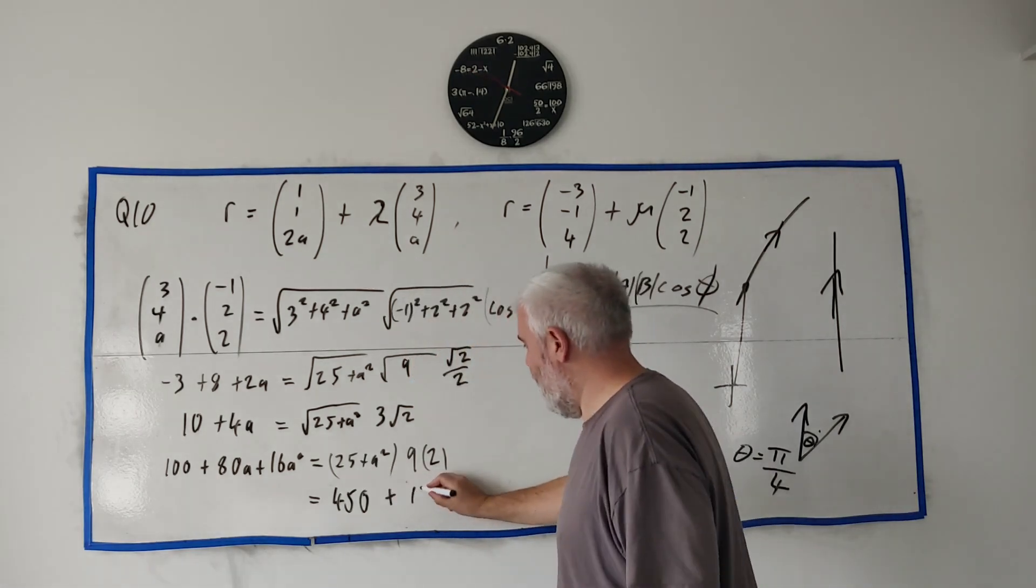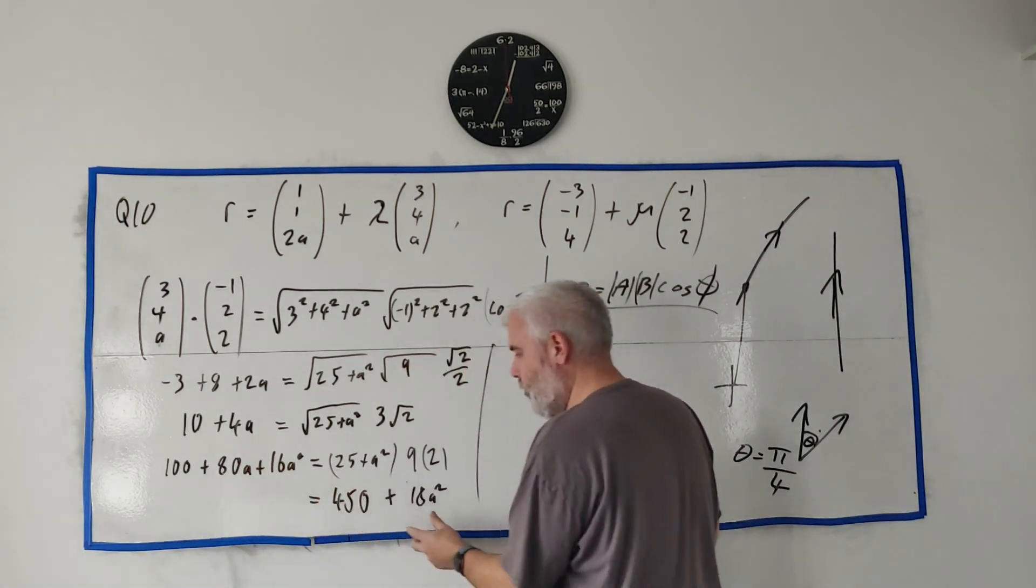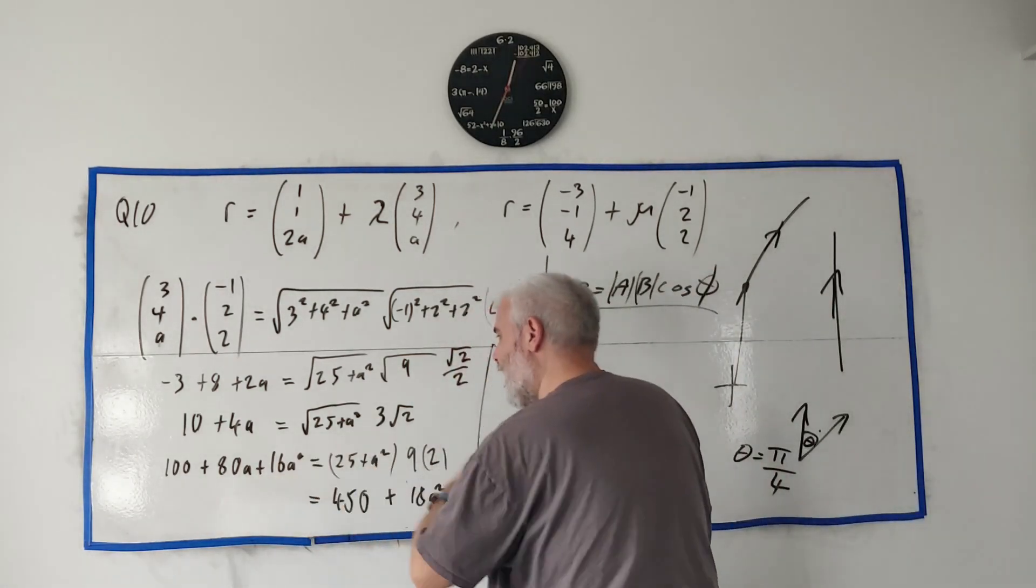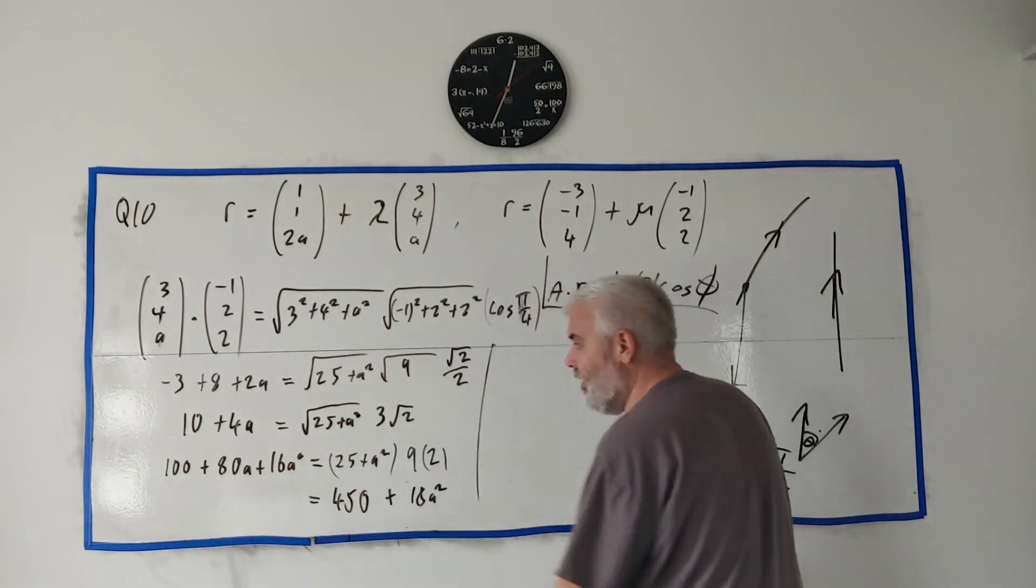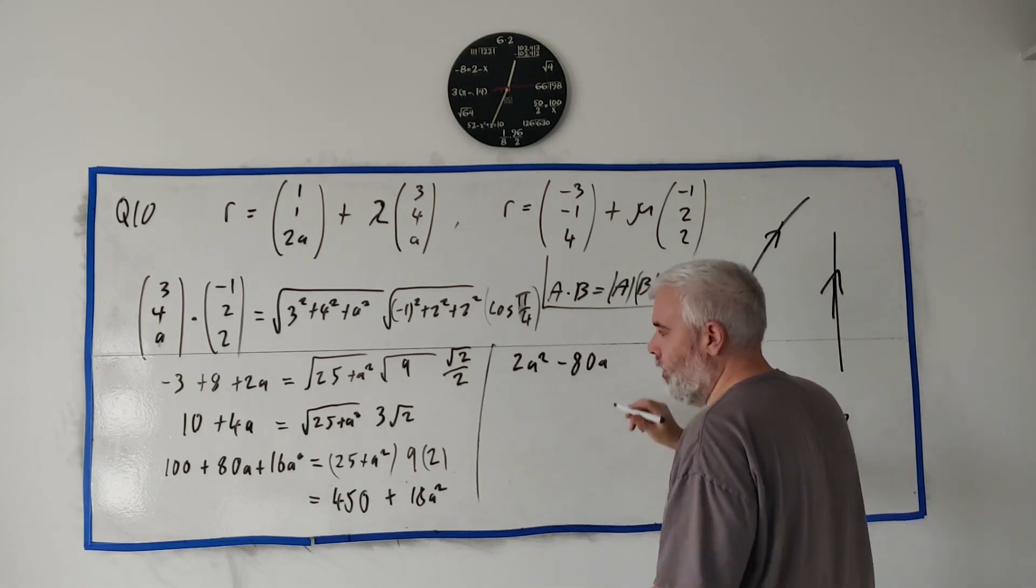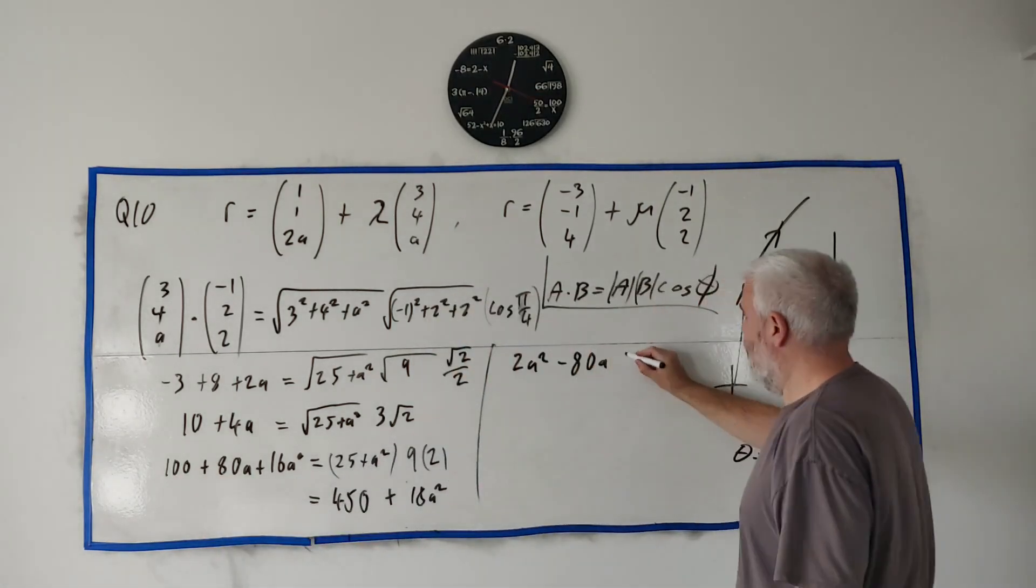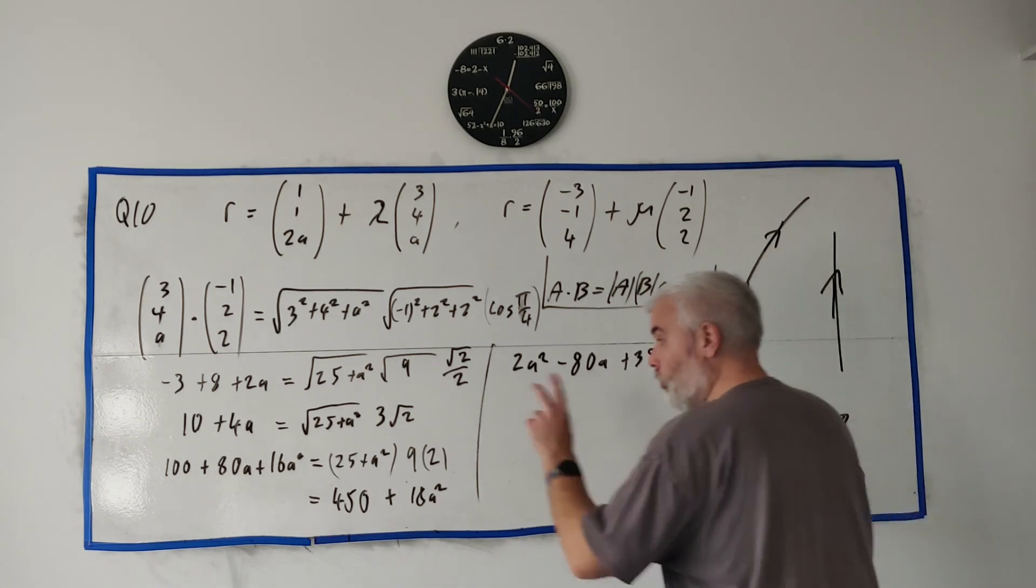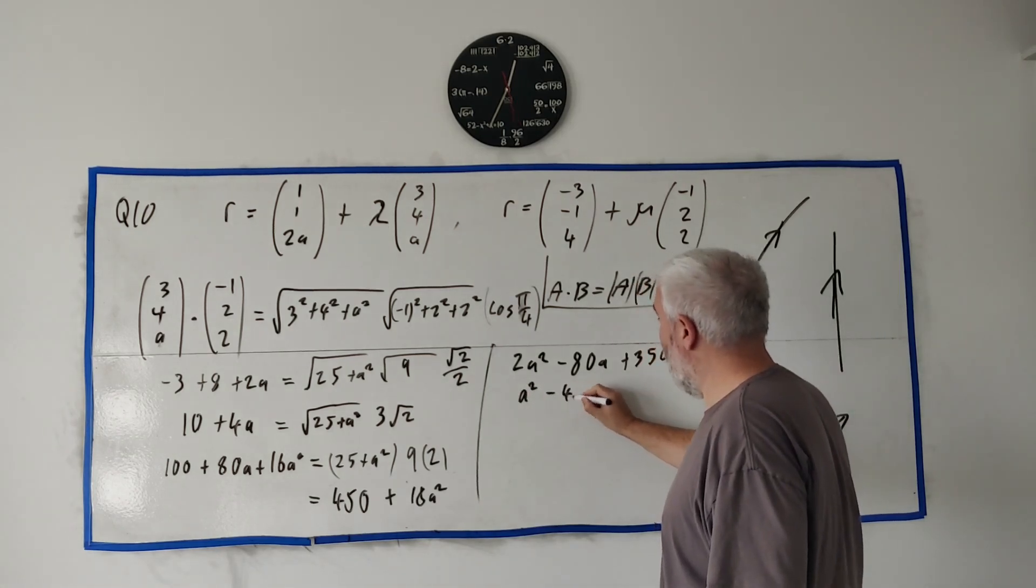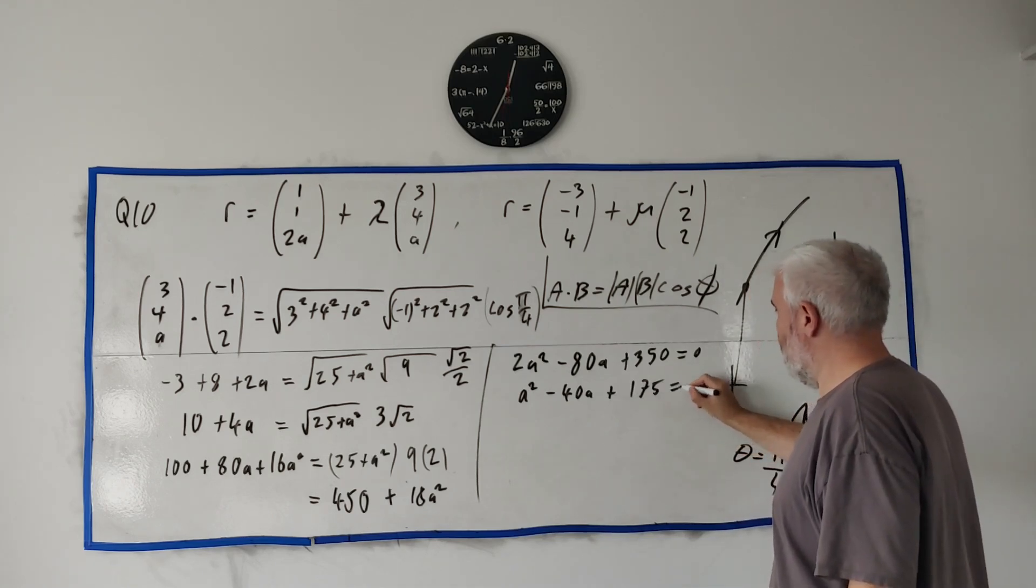We have an a², we have a couple of times we have a's, and we have numbers. Let's rearrange this and keep the a² positive. 18a² - 16a² is 2a², minus 80a, and we get 450 - 100 which is plus 350, equals 0. Everything divides by 2 so we get a² - 40a + 175 = 0.